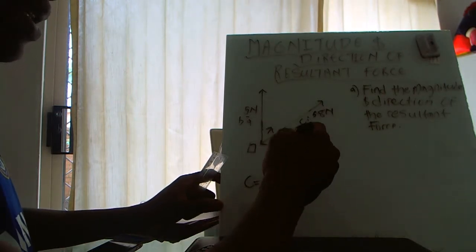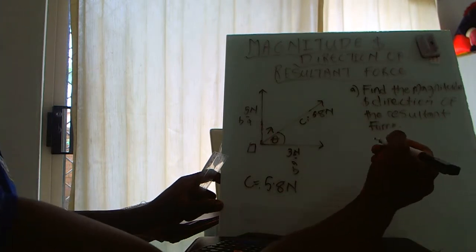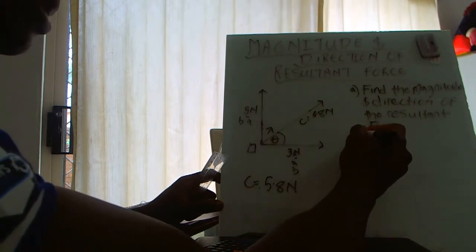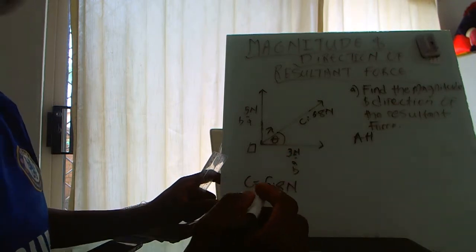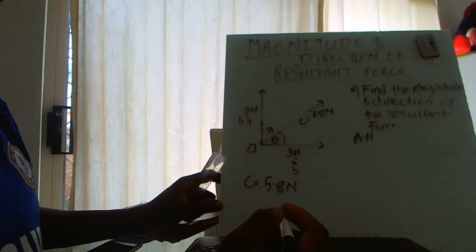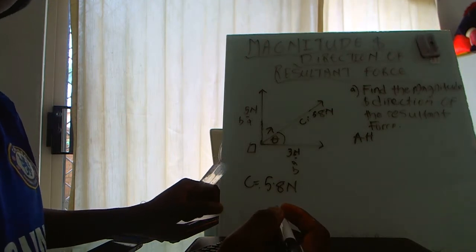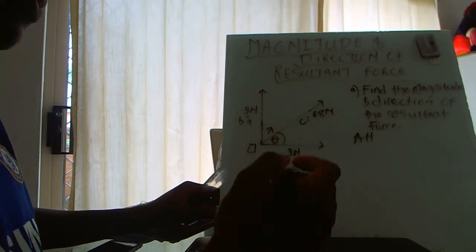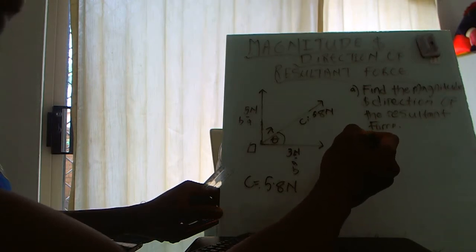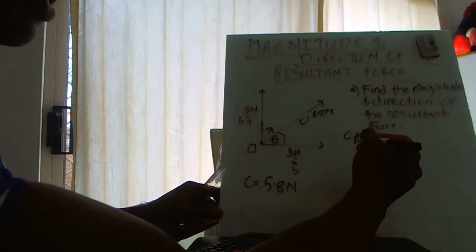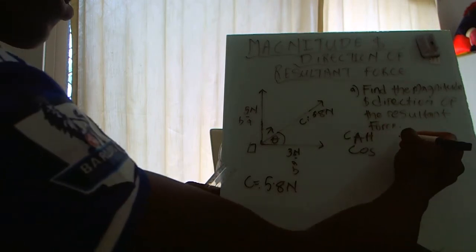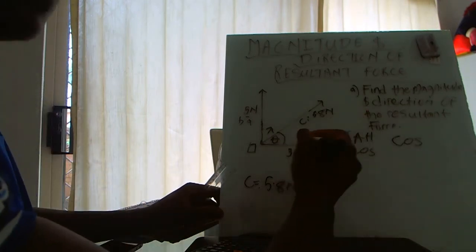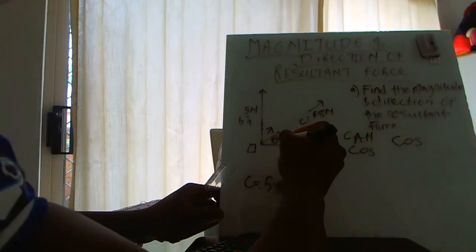When you're trying to find an angle, you look at these two. Since we have the adjacent and hypotenuse, I write this: adjacent and hypotenuse, A and H. If you remember from your work in high school, remember SOH CAH TOA?